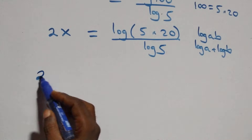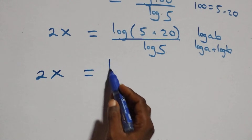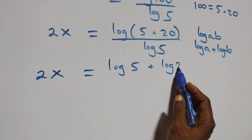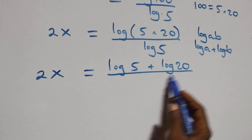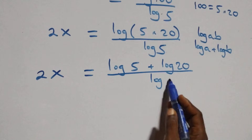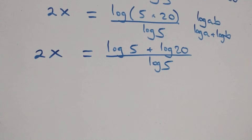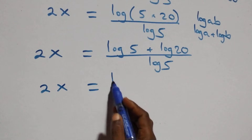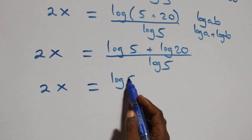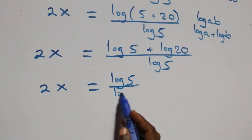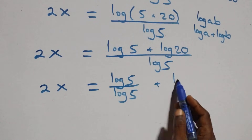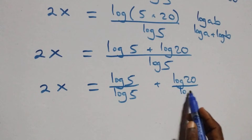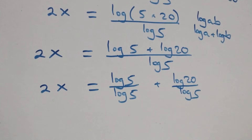We have 2x equals to log 5 plus log 20, over log 5. Then we separate this into two fractions: 2x equals to log 5 over log 5, plus log 20 over log 5.